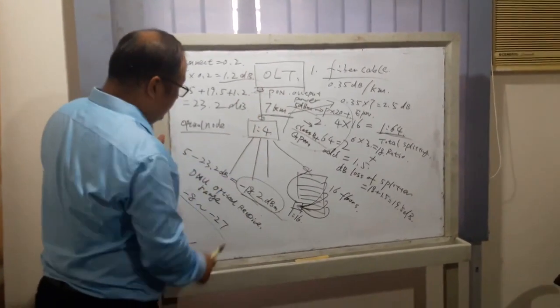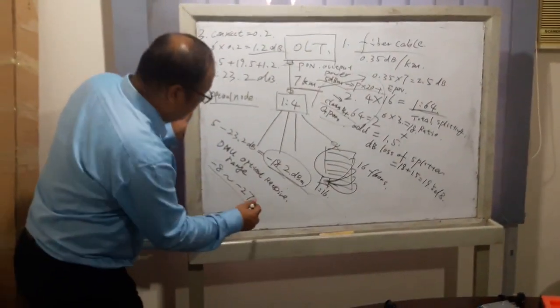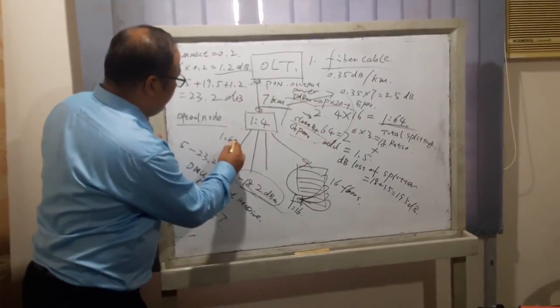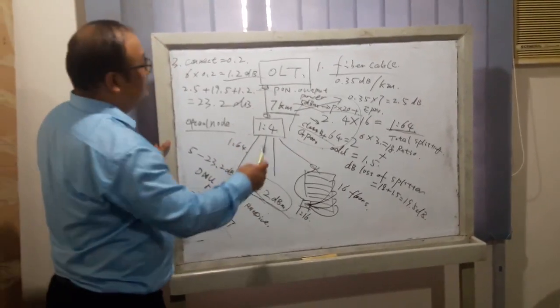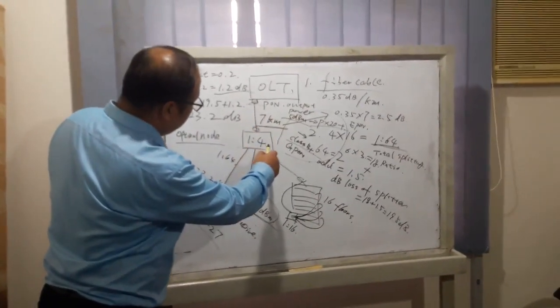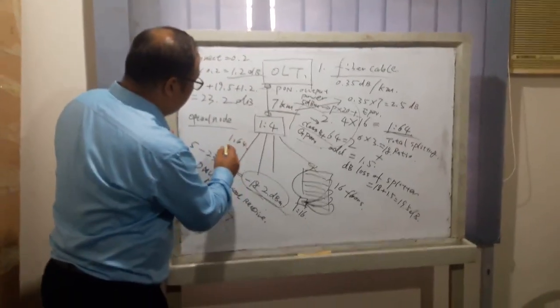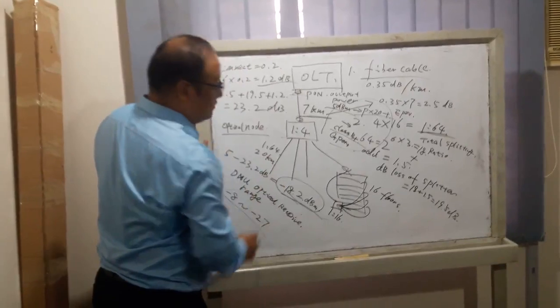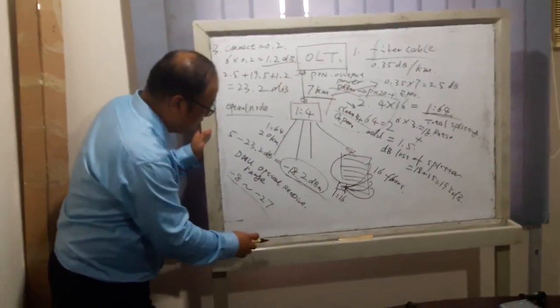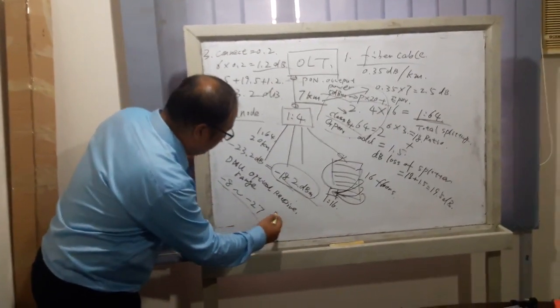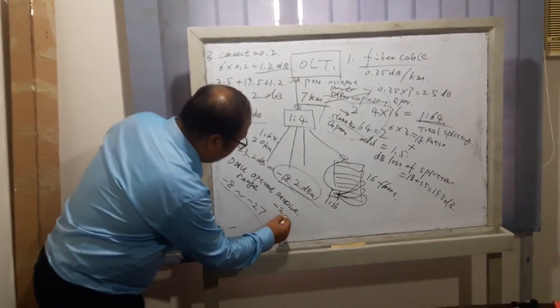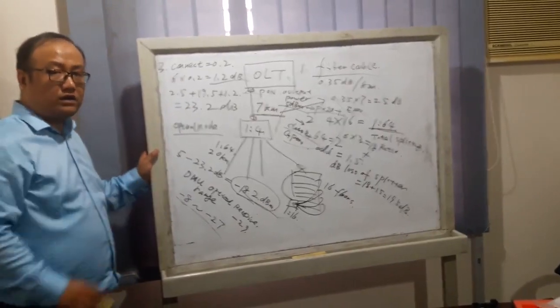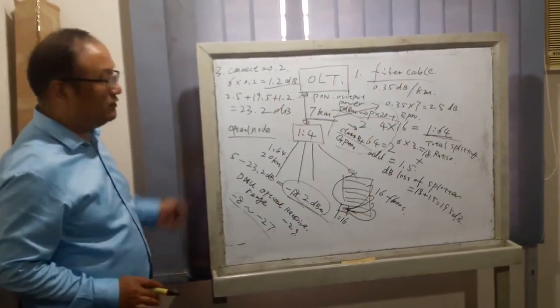If as you count is out of this range, maybe the splitter is 1 to 64 and the fiber is too long, the distance too long, maybe 20 kilometers. That will over this range. For example, received optical maybe minus 29, the ONU maybe will not work. That's all, thank you.